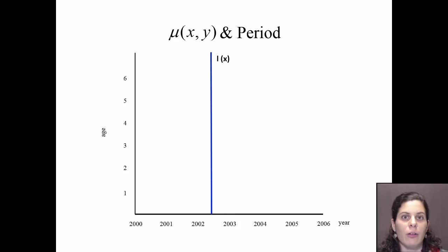We can represent graphically L, which is the formula e to the power of minus integral of μ over A, where A represents the ages and y represents the year. In this case, 2002.